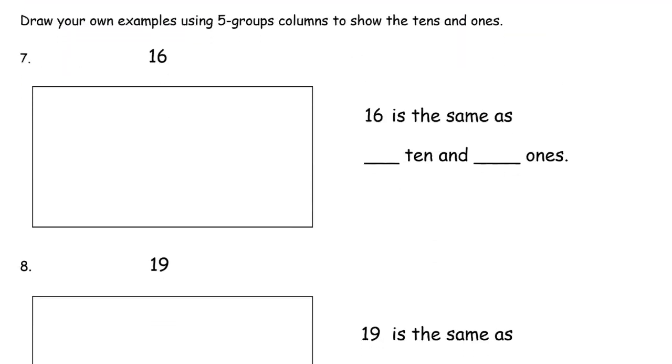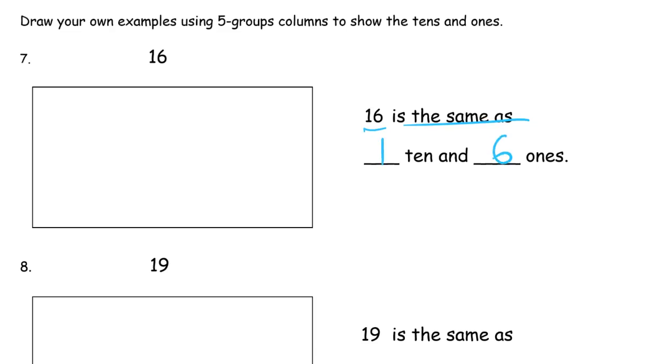And now we're drawing our own examples using 5 group columns to show 10s and 1s. Here's 16, 16 is going to be the same as 1, 10, and 6 ones, because it's 10, 6. So here we go, 1, 2, 3, 4, 5, 6, 7, 8, 9, 10, and that's our 10, and now we need 6 ones, so that's 10, 11, 12, 13, 14, 15, 16.